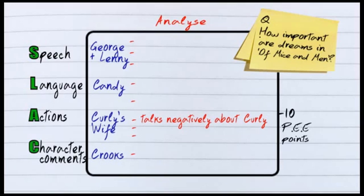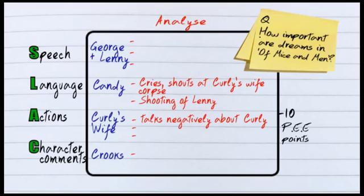A good example for actions is when you're looking at Candy, when he's crying at the end and starts shouting at Curley's wife's corpse. The shooting of Lenny in actions would be really important as well. When it comes to speech, a very obvious one for dreams is Lenny's insistence to talk about the rabbits.